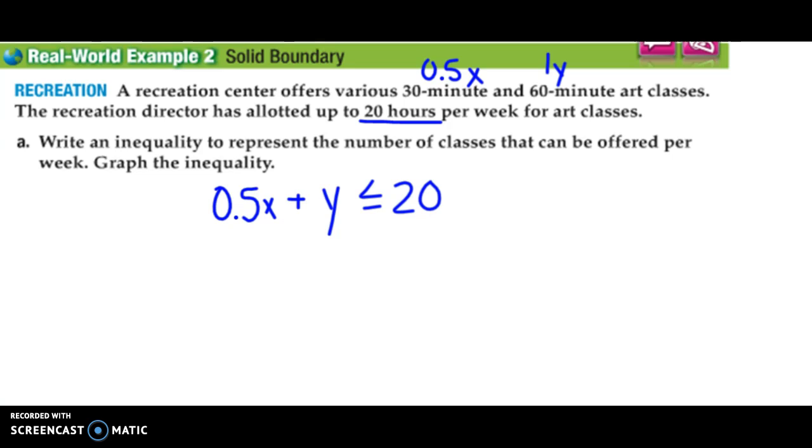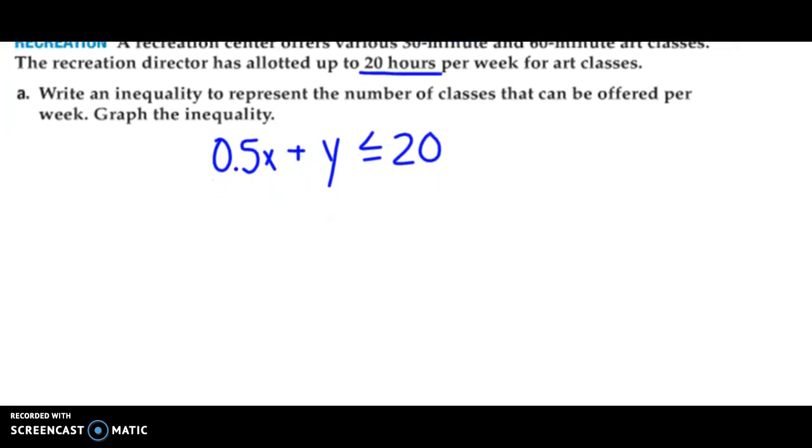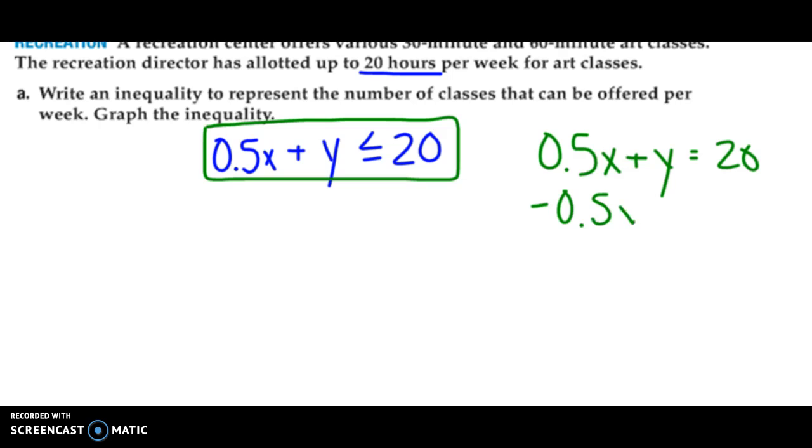So I'd set up my inequality like this. Half times the first class, like 30 minutes, plus one y or just y of the other class has to be less than or equal to 20. Okay, they could have less than 20 hours worth of classes, but they can't have any more. So if I set this up, this could be my answer. This would be my answer right here. They ask us to graph it. So what I'm going to do is I'm going to set this up in the slope-intercept form. So what we said was to rewrite it using the equal sign. I would subtract 0.5x on both sides. And I find that y is equal to negative 0.5x plus 20.